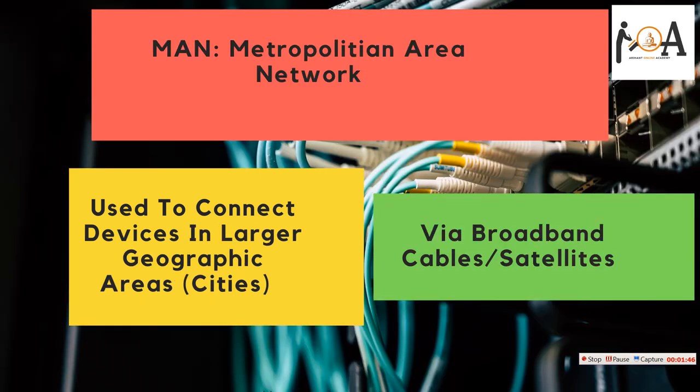After WAN comes MAN — Metropolitan Area Network. MAN has a networking area broader than WAN. LAN is the shortest, then WAN, then MAN. Metropolitan Area Network connects devices over larger geographic areas like cities — for example connecting all Mumbai, Bangalore, or Kolkata users via private broadband cables, fiber cables, or satellites. It may consist of some states as well.